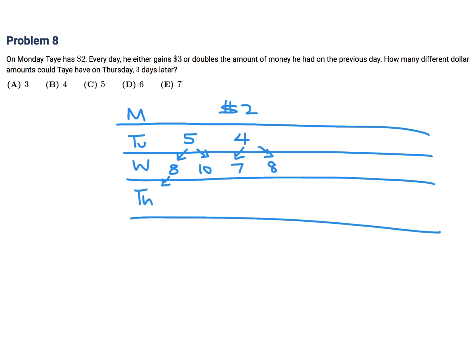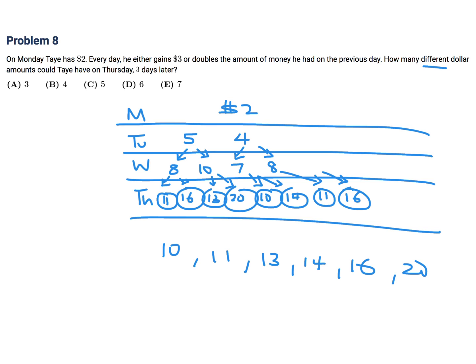And then we do this once again. Eight can go up to 11 or double and go to 16. 10 can go to 13 or double and go to 20. Seven can go to 10 or double and go to 14. And eight can go to 11 or double and go to 16. So how many different numbers do we got? We got 11, we got 10, we know 12, we have a 13, we have a 14, we have a 16, and we have a 20. So how many different is I guess the key word? One, two, three, four, five, six different. So the answer to this is D.